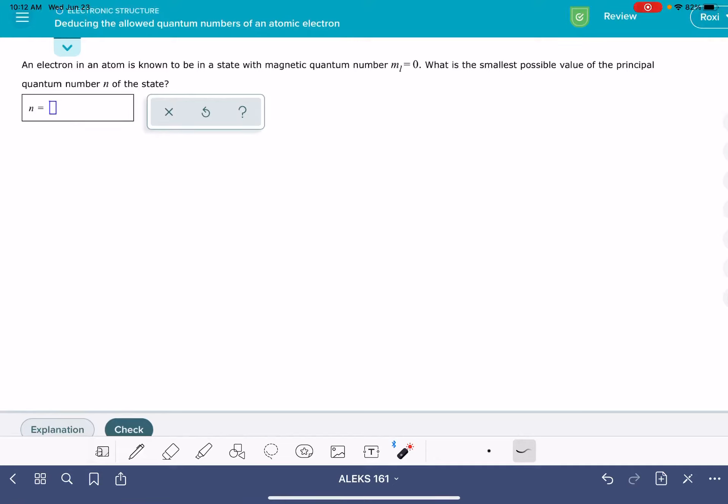In this video, I'll show you how to solve the ALEKS problem called deducing the allowed quantum numbers of an atomic electron. In this problem, you'll be given the value of one of the quantum numbers for an electron. I've been given the value m_l equals zero, and then you'll be asked to figure out or propose a possible value for one of the other quantum numbers.